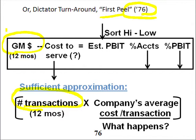So let's say a customer had $10,000 in margin and 100 transactions times $100 per transaction, or $10,000 cost to serve — their estimated PBIT would be zero. If the margin was $8,000, then the PBIT would be $2,000. If the margin was $20,000 and cost to serve was $15,000, then the PBIT would be $5,000.